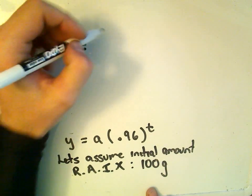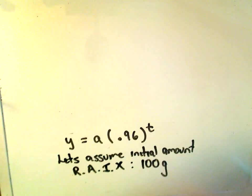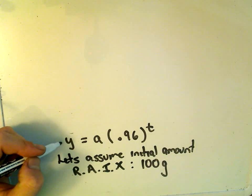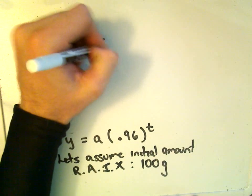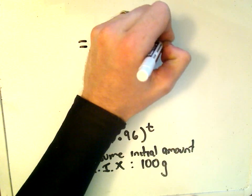So now the problem that we're going to have to simply solve is, why is the amount after some time t? If we start with 100 grams, so we still have our 0.96 raised to the t.